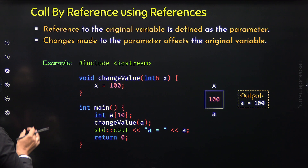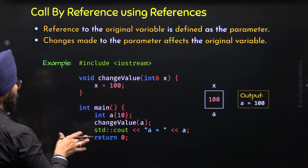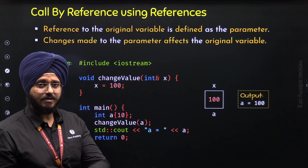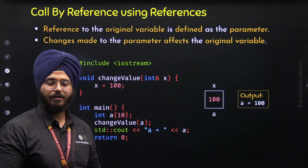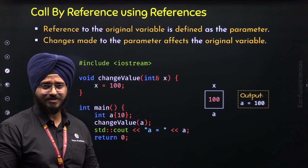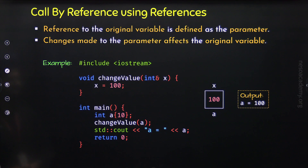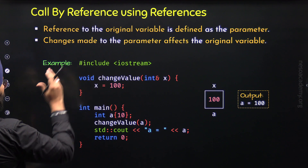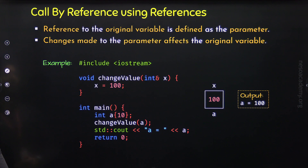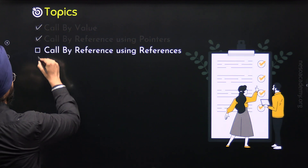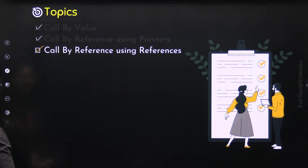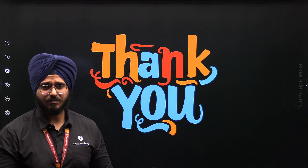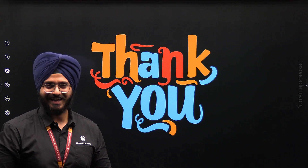We have understood call by reference using references, and now we know the difference between call by reference using pointers and call by reference using references. In C++, it is better to use references, especially when we want to make updates to a variable in some other function. With this, we are done with all three topics and this lecture. Thank you for watching — I will see you in the next one.